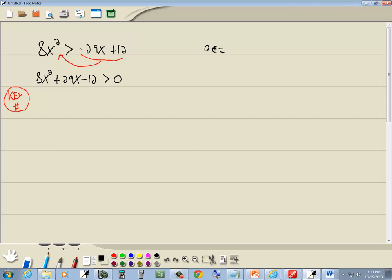So with the key number, we take the number at the beginning times the number at the end. So we got 8 times 12, ignoring signs, which gives us 96.